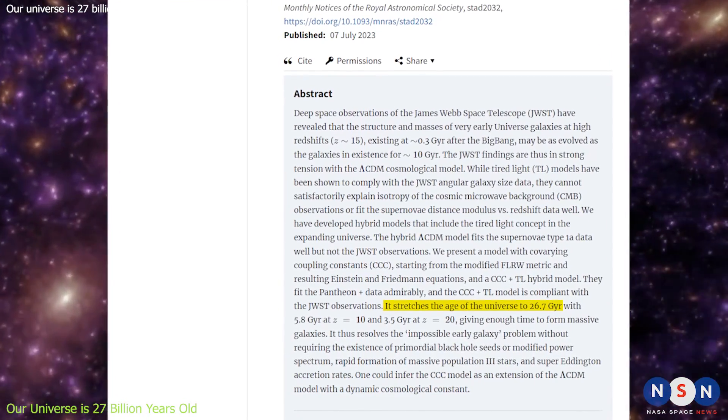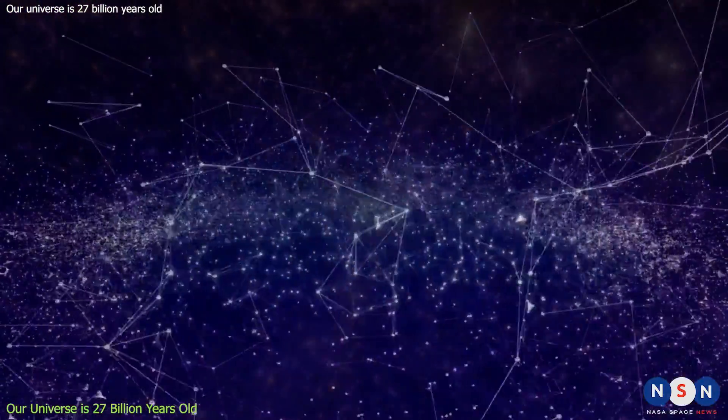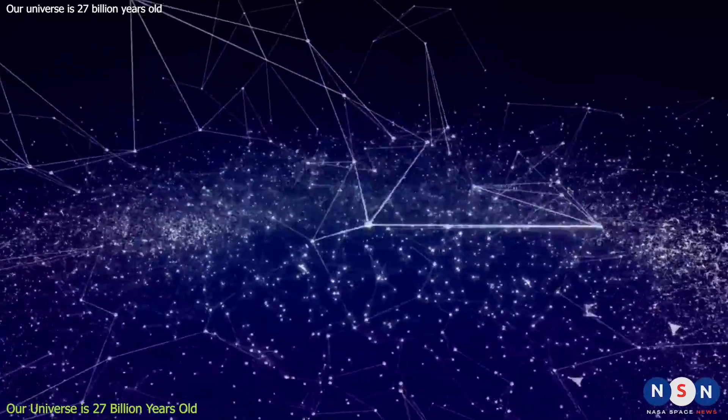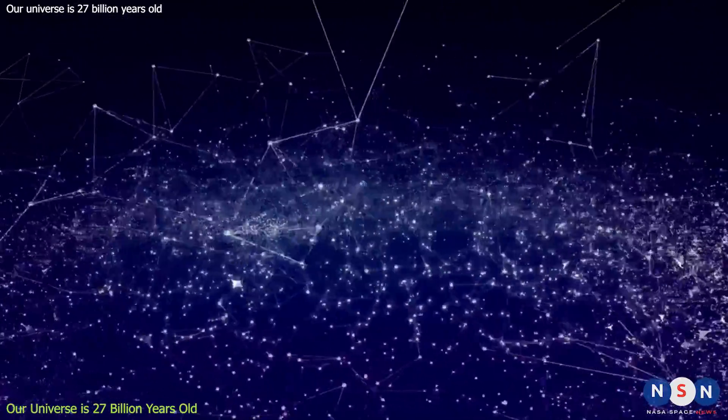That's right, twice as old as we thought. How did he come up with this number? Well, he challenged some of the assumptions and methods that we use to calculate the age of the universe, and introduced some new ideas based on existing theories.